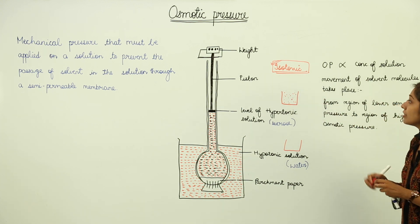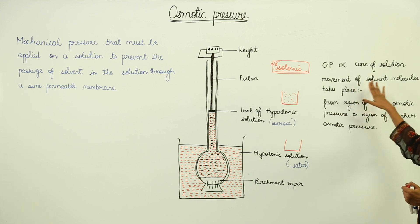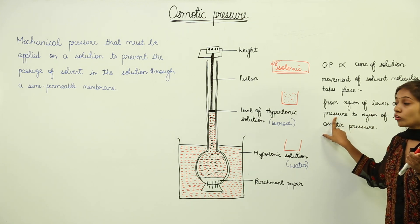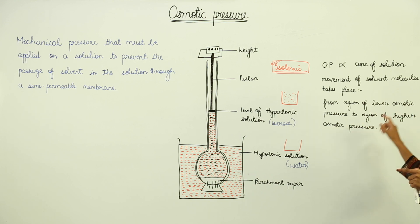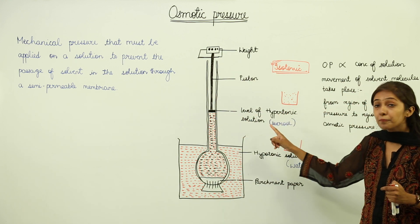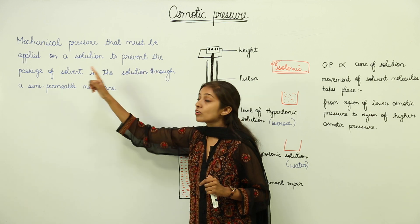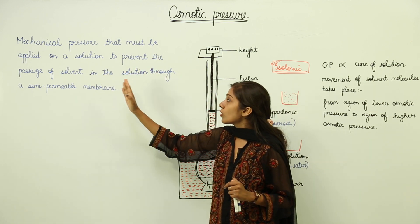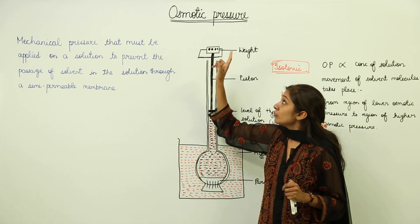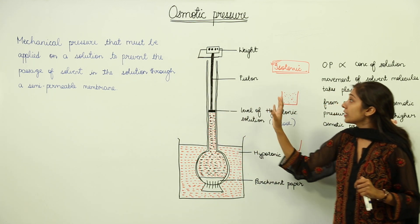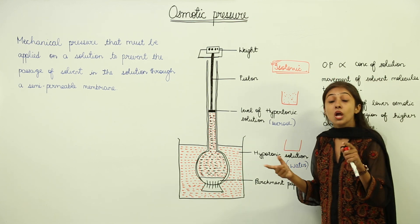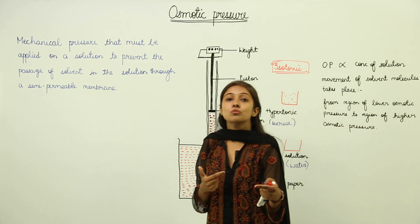You now have a fair idea about the movement of solvent molecules, which takes place from a region of lower osmotic pressure — means from a dilute solution — to a region of higher osmotic pressure, means to a concentrated solution. This is how you will demonstrate osmotic pressure — the mechanical pressure that must be applied on a solution to prevent the passage of solvent in the solution through a semi-permeable membrane. Osmotic pressure is directly proportional to the concentration of the solution: more concentrated the solution, more is going to be the osmotic pressure.